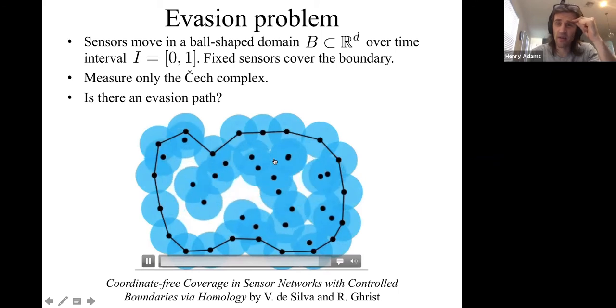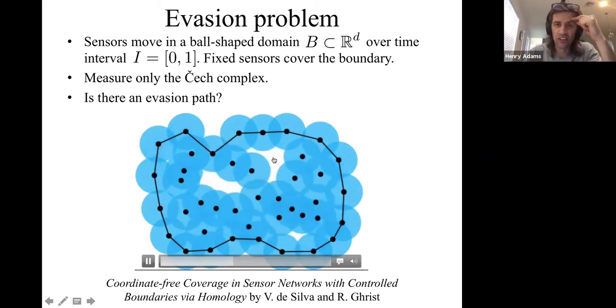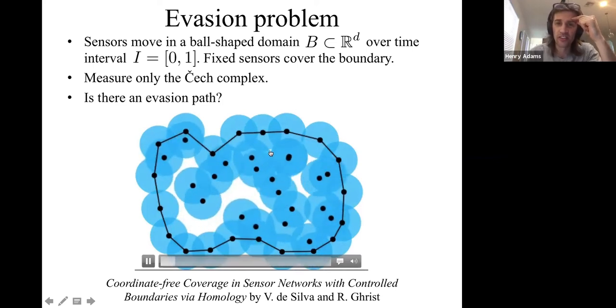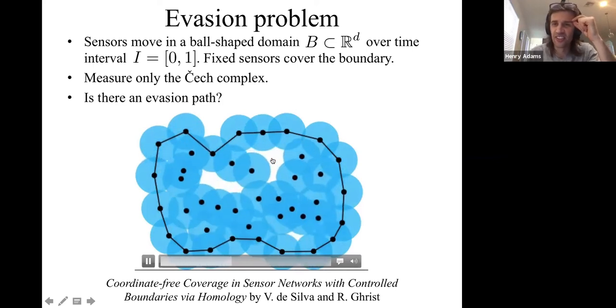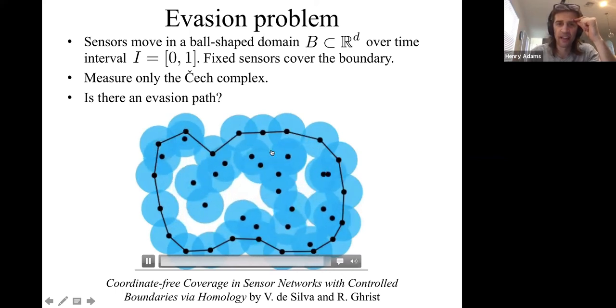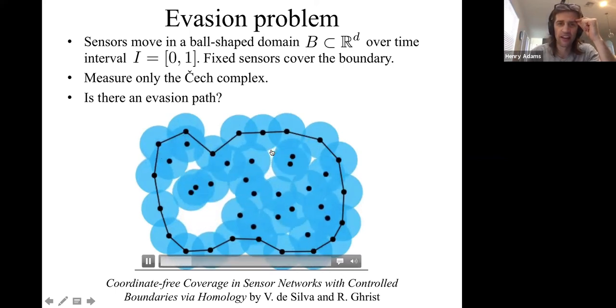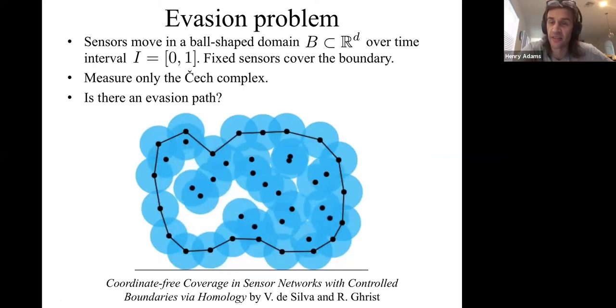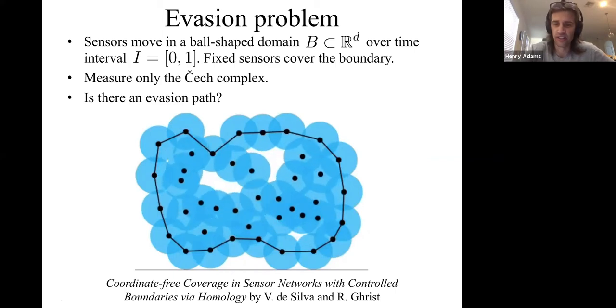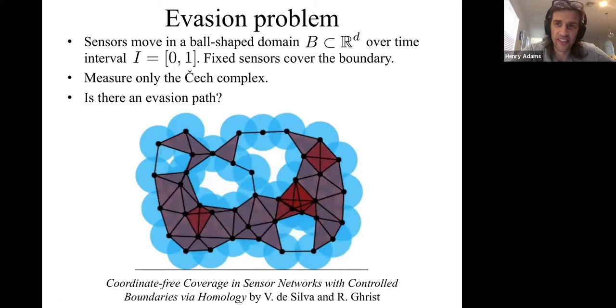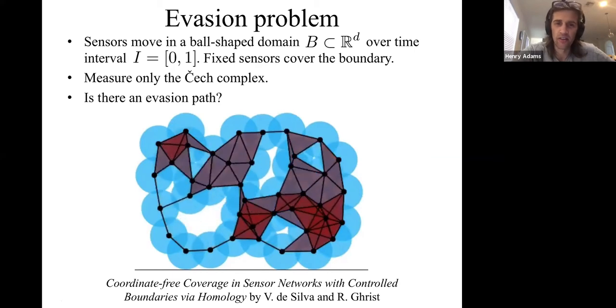In this demo, it's on a loop. But no matter where the intruder starts, no matter what unseen white region the intruder starts in, the intruder is eventually going to get seen by one of the sensors. With the GPS coordinates, you could just plot this picture and tell whether there's an evasion path or not. But is this possible if all you have is this connectivity data of the sensors?